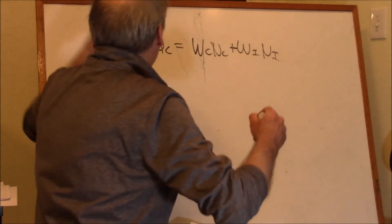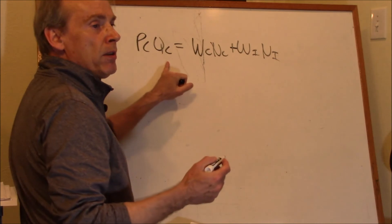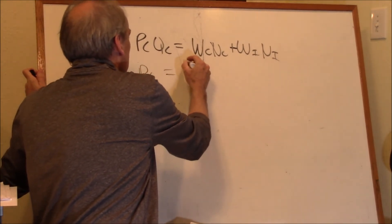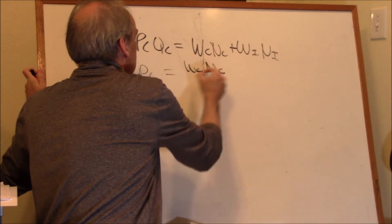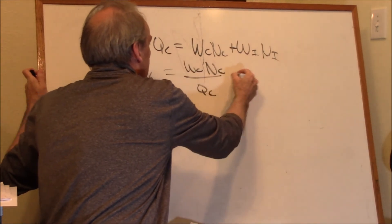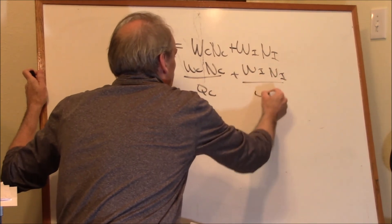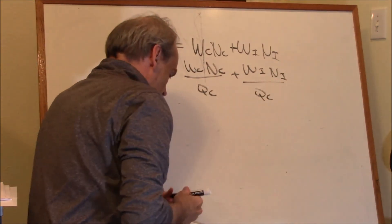So what's the easiest way to figure out what PC is? Well, divide both sides through by QC. PC is equal to WCNC over QC plus WINI over QC. All right. That's great.